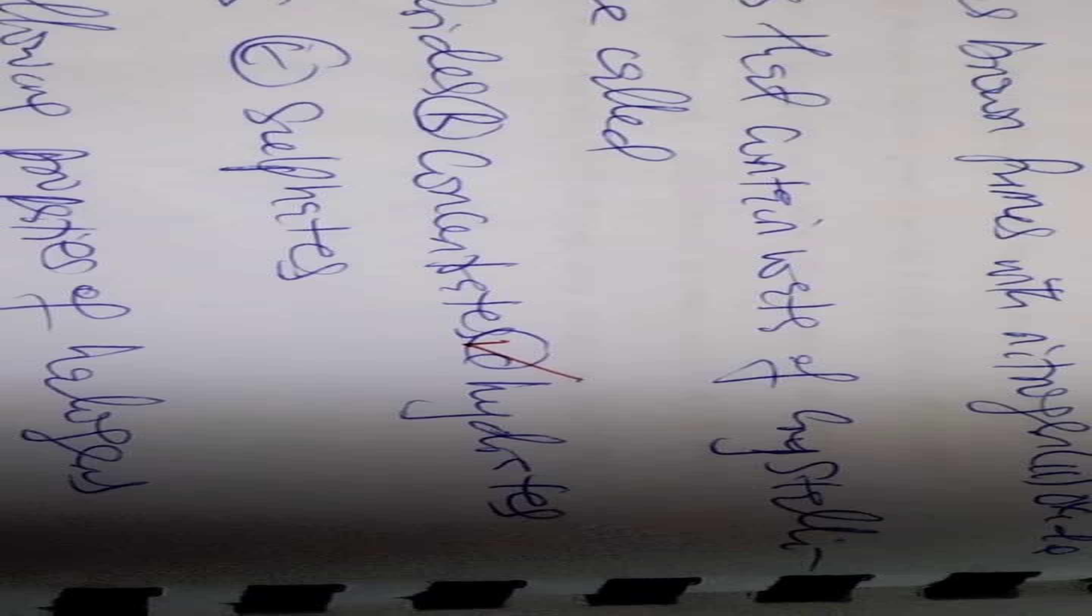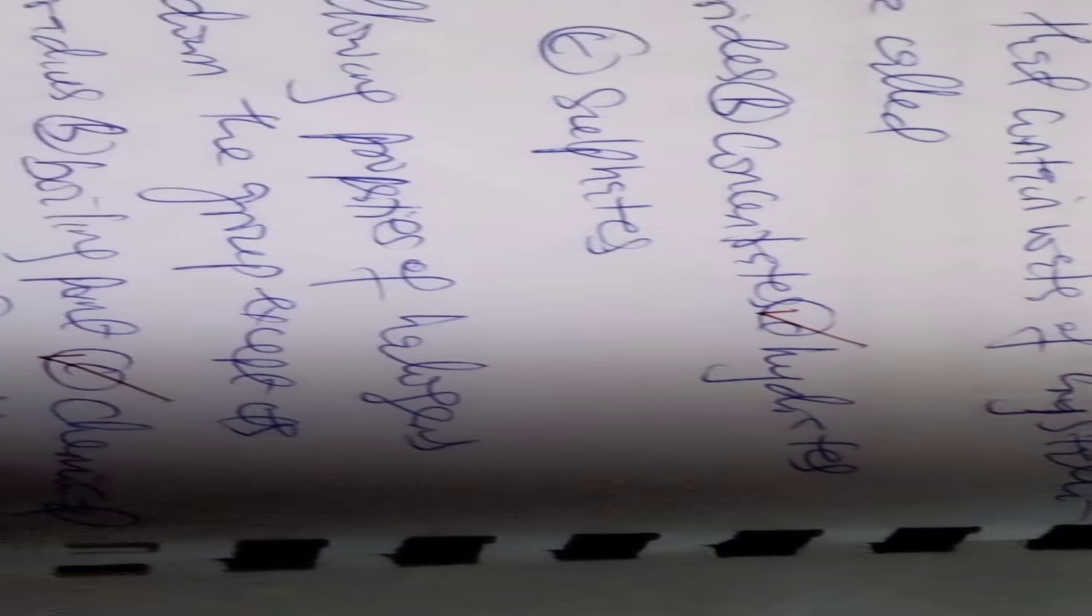Number 41: Salts that contain water of crystallization are called A anhydride, B concentrate, C hydrous, D oxides, and E sulfates. The answer is option C for number 41, hydrous, or we can call it hydrated salts, option C.